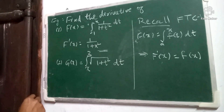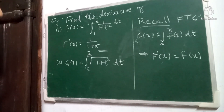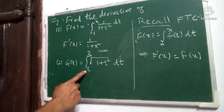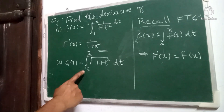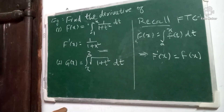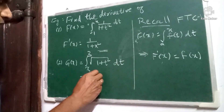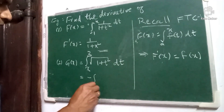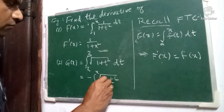The second problem: g(x) = ∫ₓ³ √(1+t²) dt. We want to find g'(x). Here the lower limit is x and the upper limit is 3. We have to put it the other way around — the upper limit should be x and the lower limit must be some constant. So by the property of integrals, this becomes ∫₋₃ˣ √(1+t²) dt.